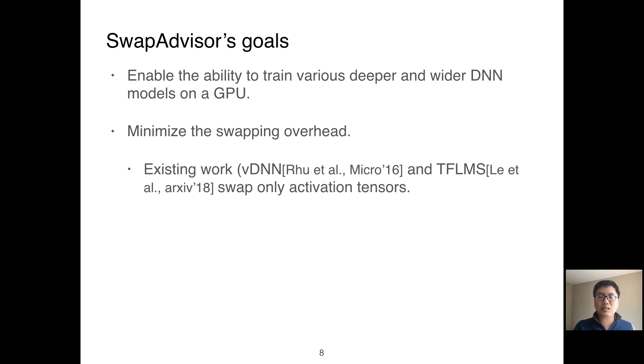Some existing work has proposed several optimizations to swapping tensors for DNN models. However, these optimizations are generally based on some assumptions of the models. For example, two existing works have optimized swapping for deeper convolutional neural networks. They both swap only the activation or output tensor for the operator. Unfortunately, this assumption makes the system useless for wider networks and other types of networks such as RNN. These existing works do not meet our goals.